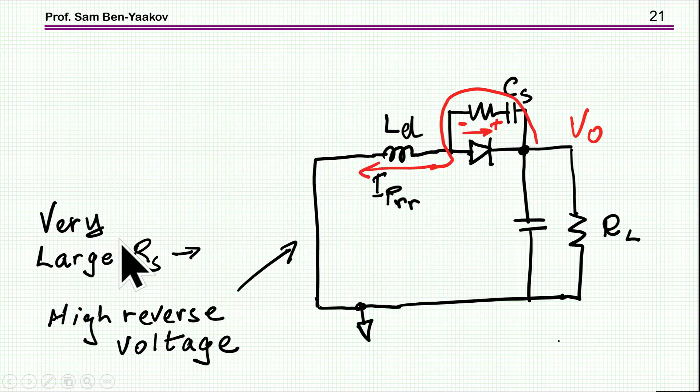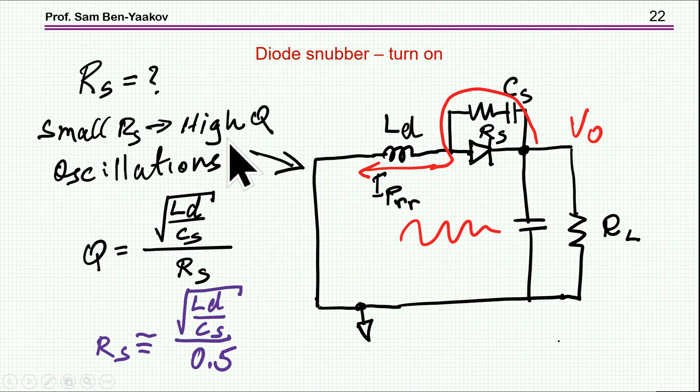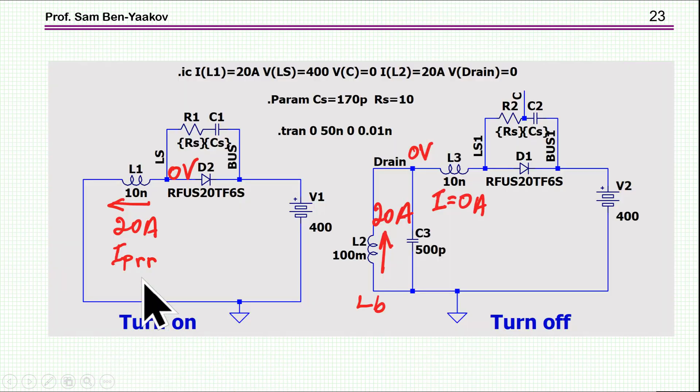Now, what about a very large resistor? Well, this is no good also because if you have a very large resistor, then you have the current rushing in here, and this will cause a high voltage here, and this might cause a breakdown of the diode. So, the choice of the RS will be based on the quality factor. We want the quality factor to be below, say, 0.5. So, knowing the estimate for LD, already CS has been chosen, we can calculate the resistance of this number.